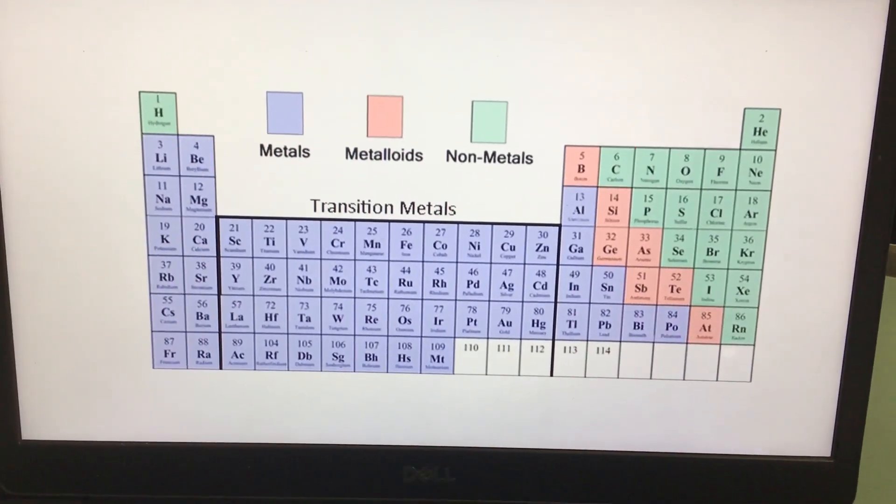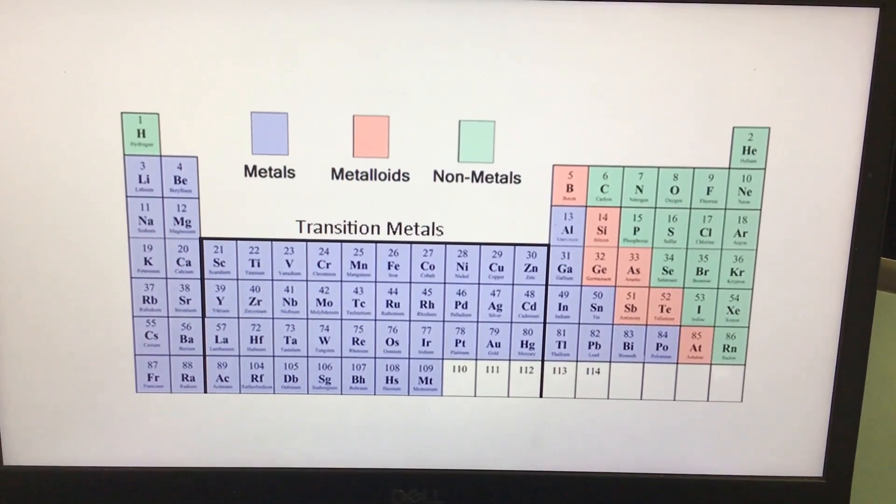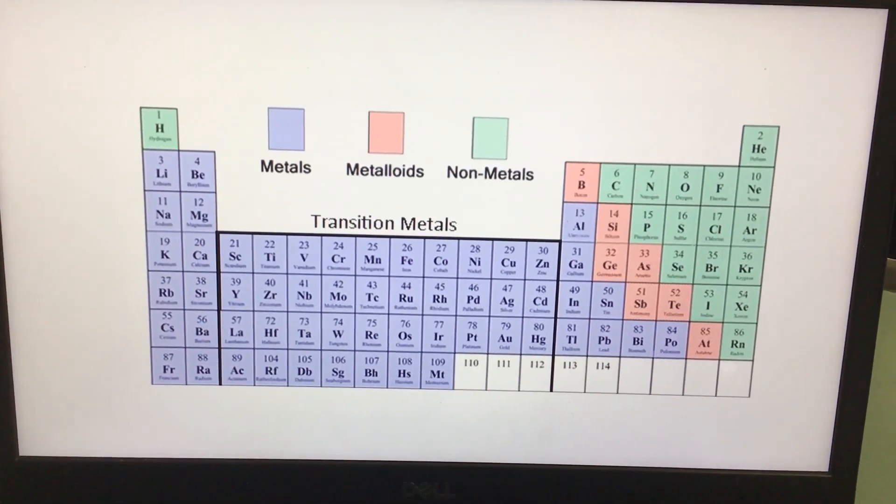Metals make up the bulk of the periodic table. Here the metals are shown in purple, non-metals are shown in green, and metalloids are shown in pink.